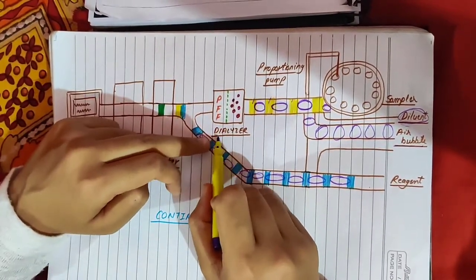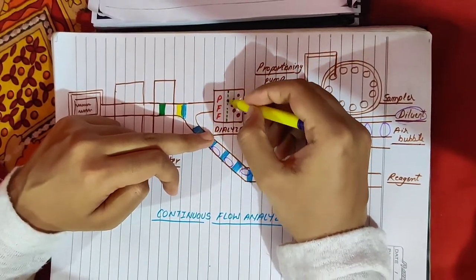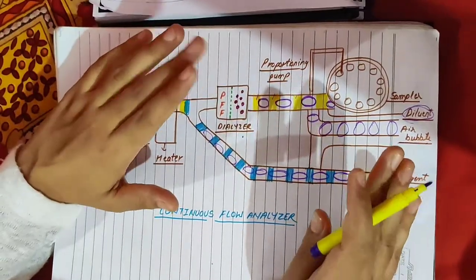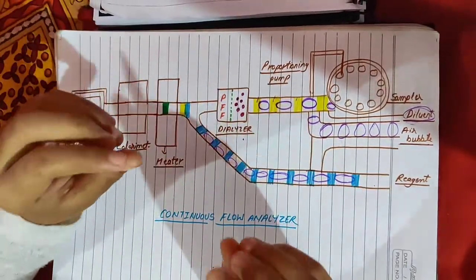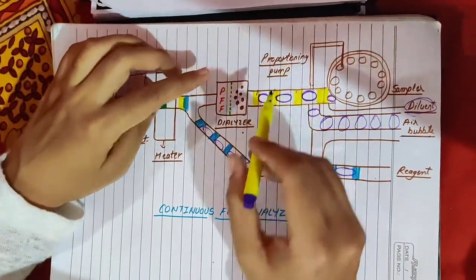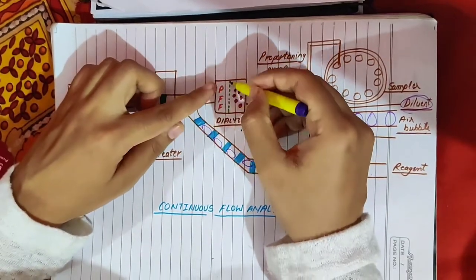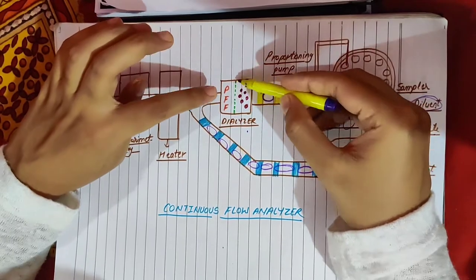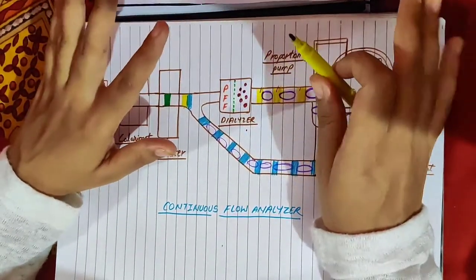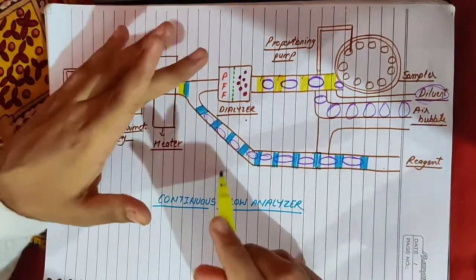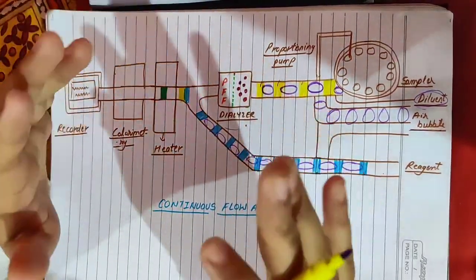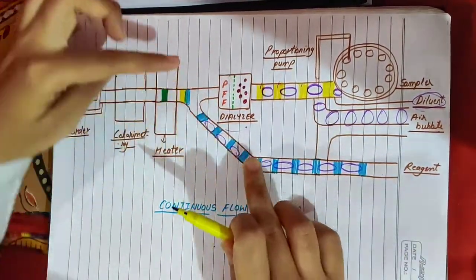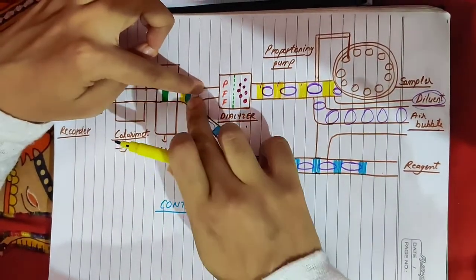Next in the instrumentation is the dialyzer. What is the work of the dialyzer? Here is a semi-permeable membrane. The dialyzer is used to obtain a protein-free filtrate from the sample. This means that proteins are removed from the sample. The sample is added on one side of the membrane, and small molecules pass through while large molecules like proteins are retained, giving us a protein-free filtrate.